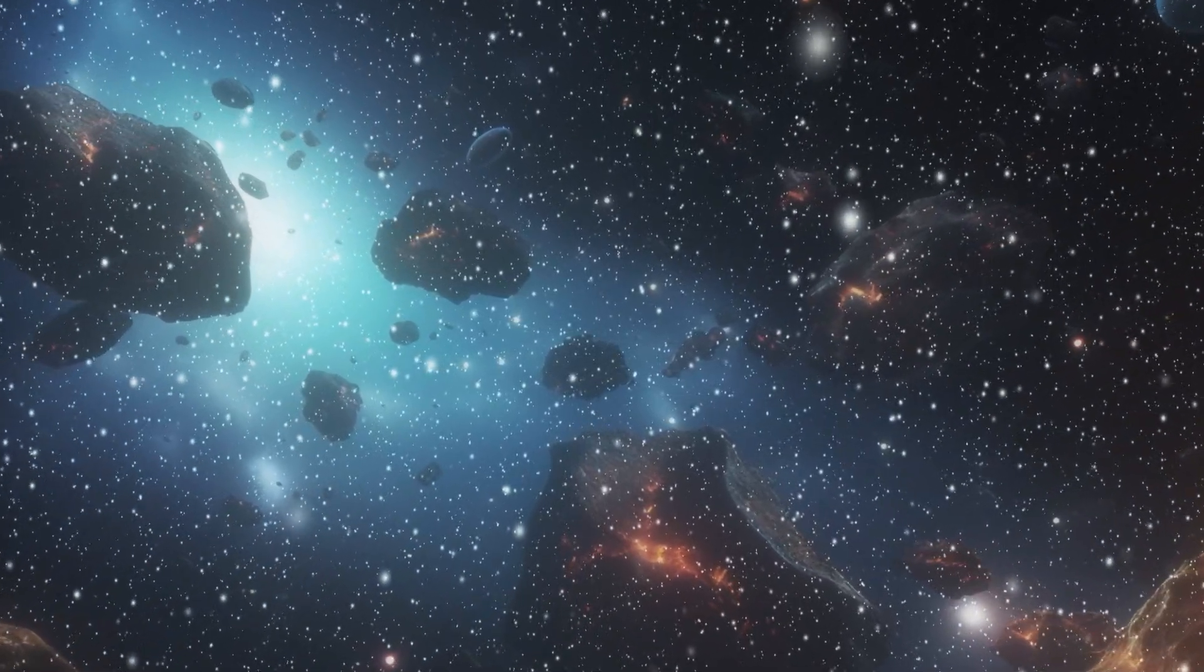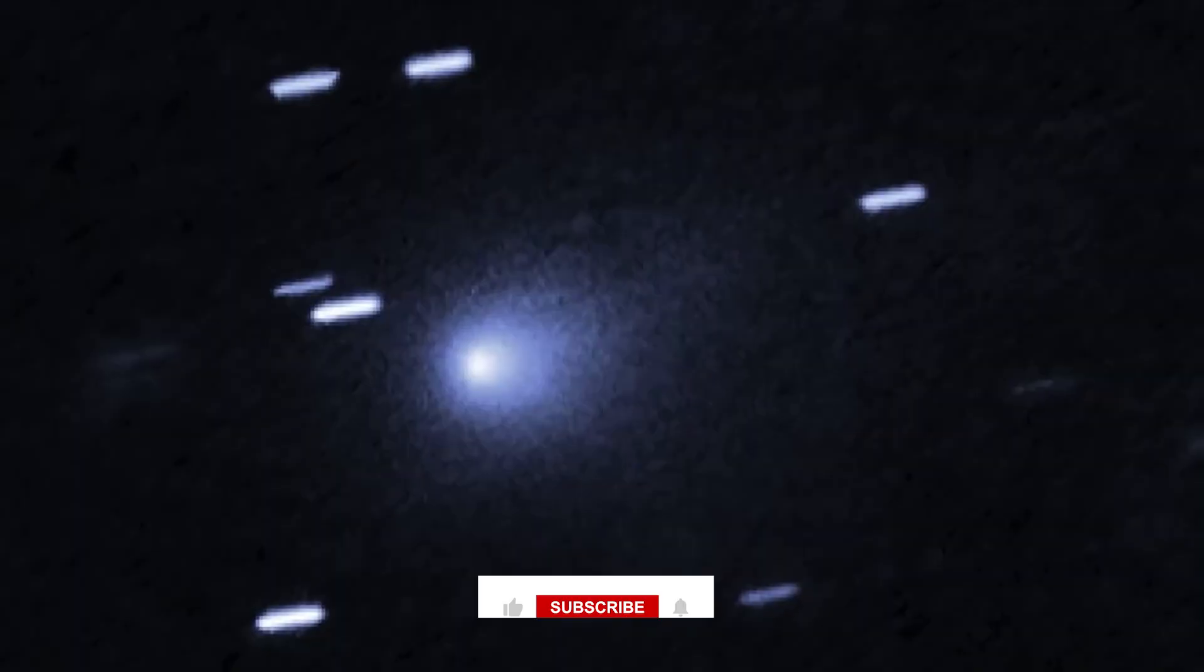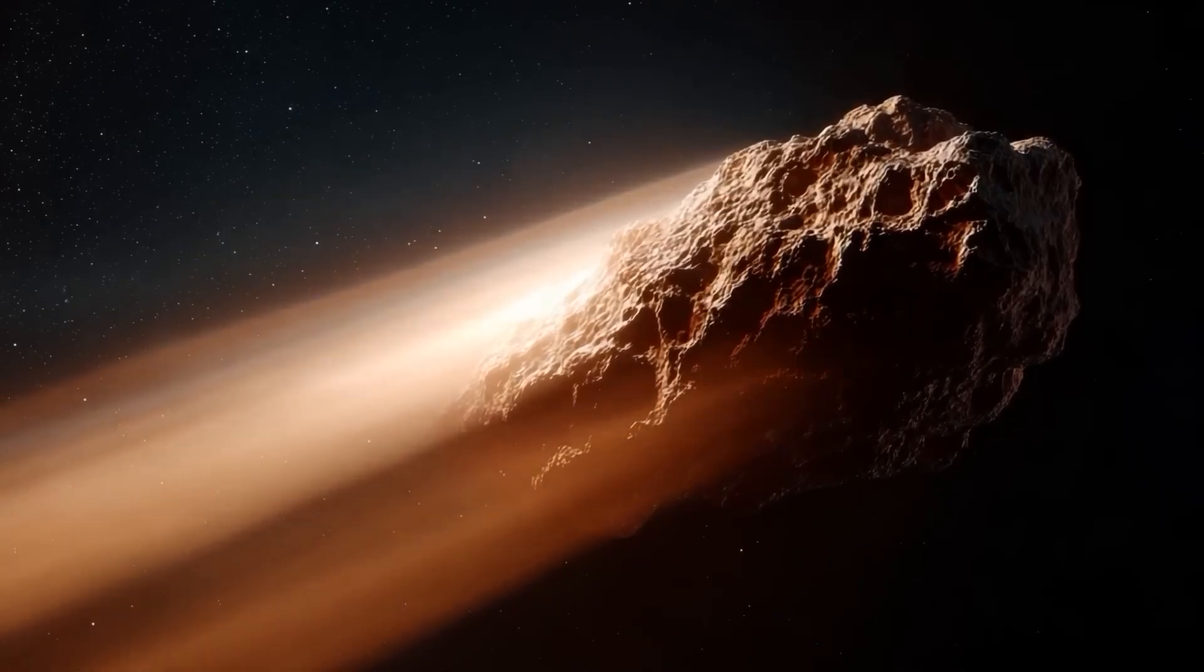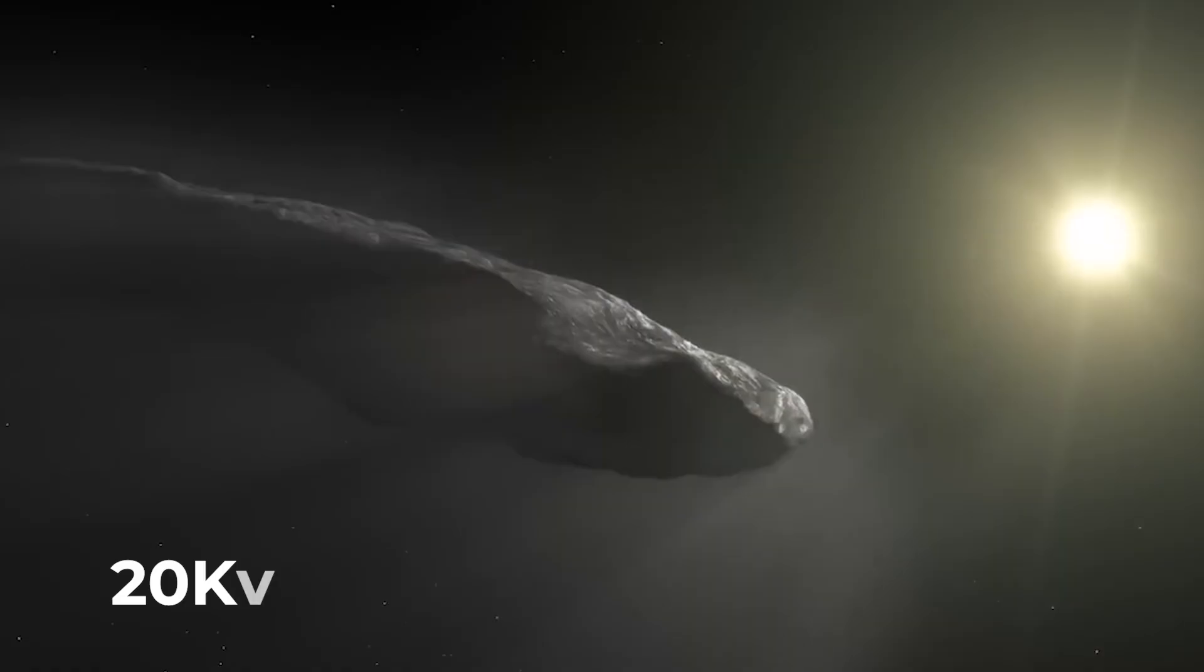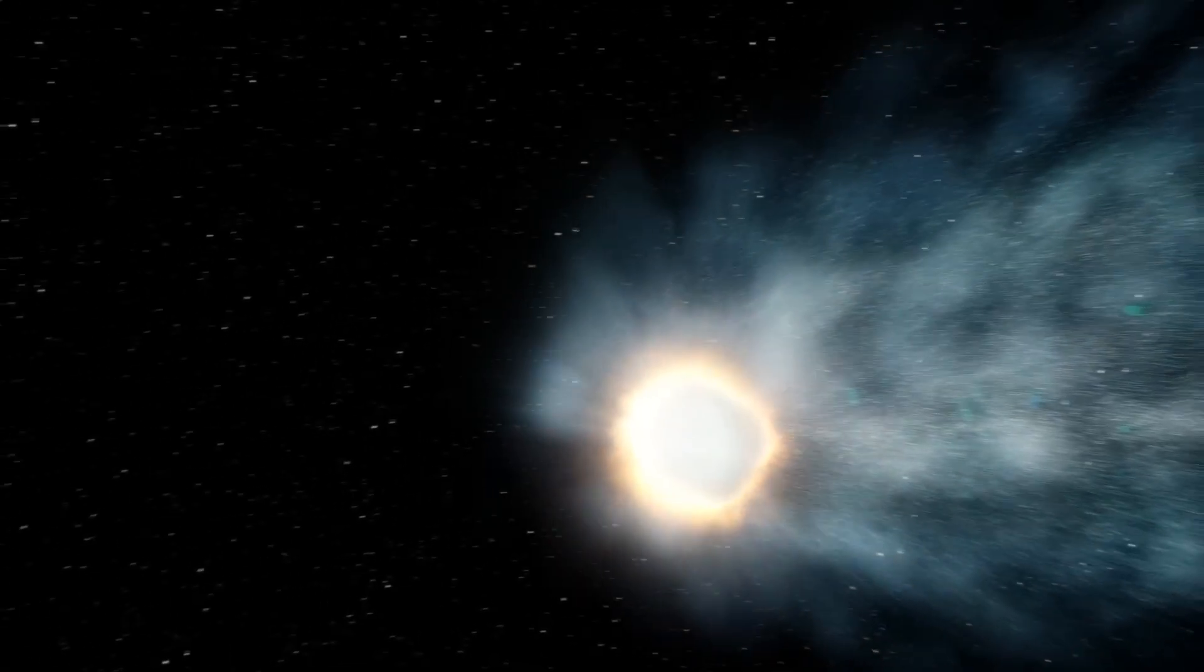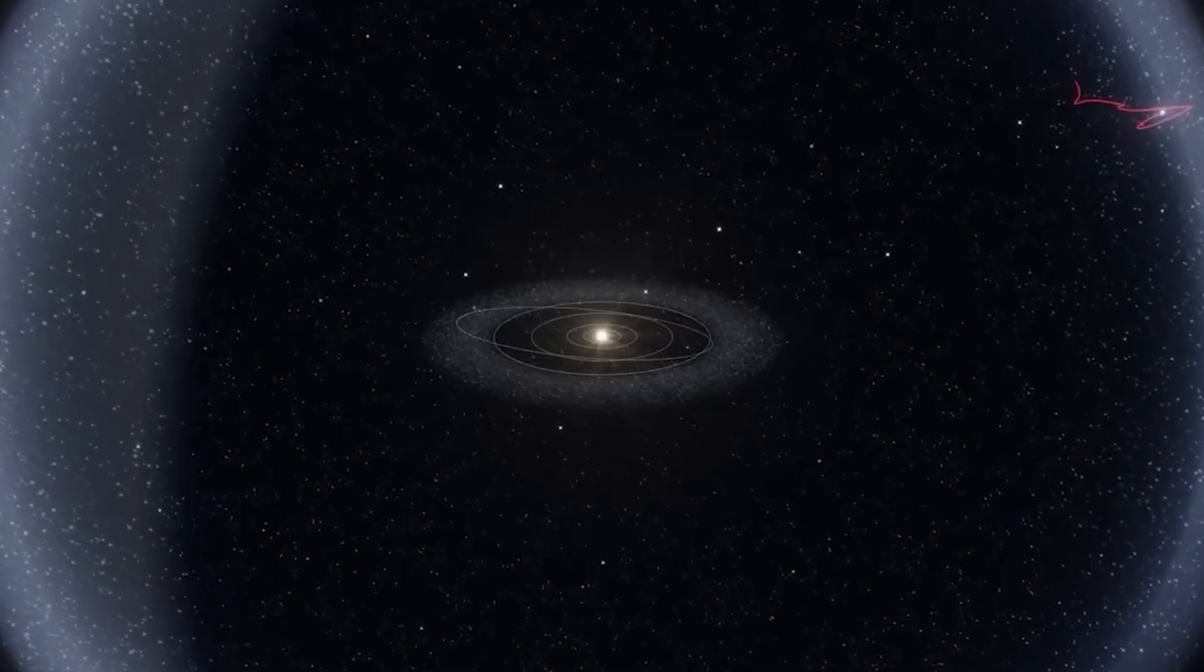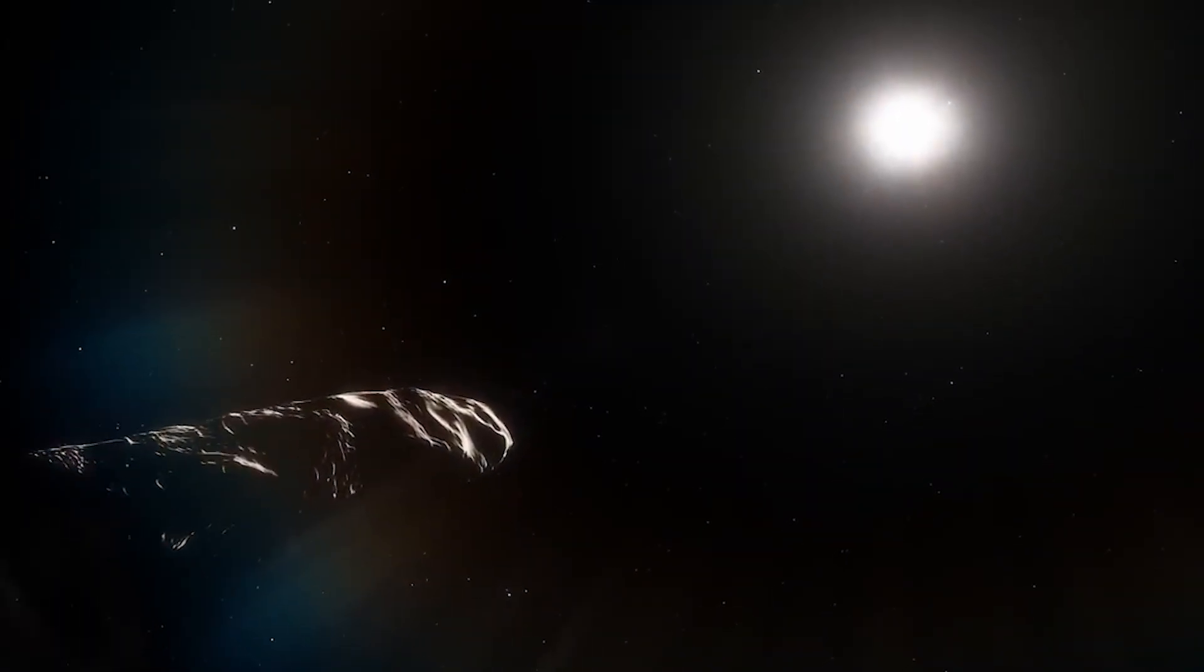Hubble has been tracking it, and the data revealed a puzzle. Its brightness profile is steep, unnaturally steep. Using the standard model, assuming it's just a dumb rock reflecting sunlight, this thing would have to be a whopping 20 kilometers across. But the statistical odds of a random 20-kilometer interstellar boulder just casually wandering into our solar system are astronomically low. We're talking a once in 10,000 years event. So either we just won the worst lottery ever, or our math is wrong.